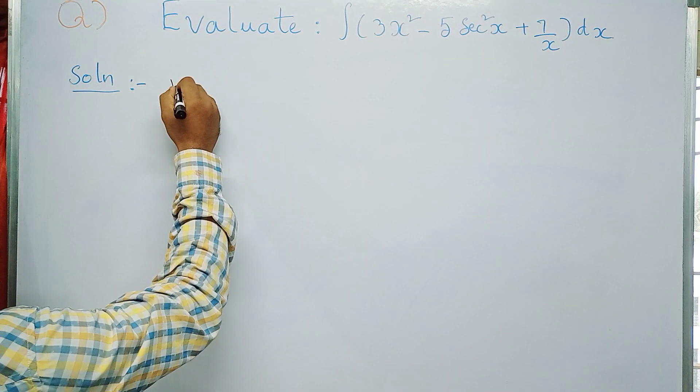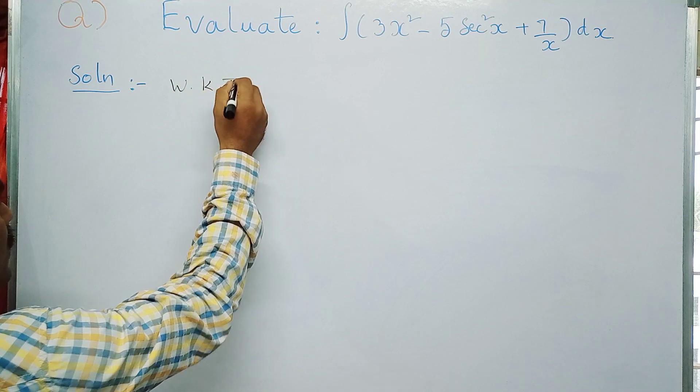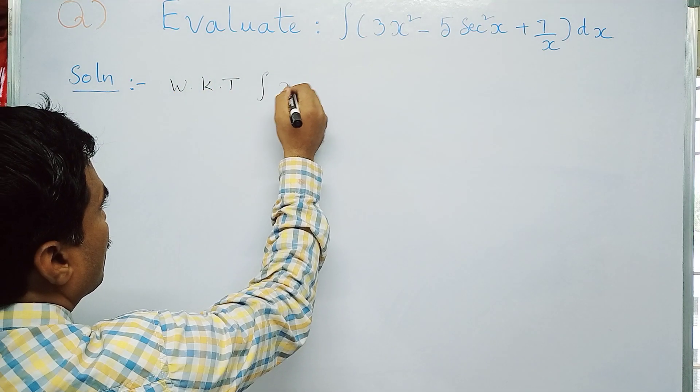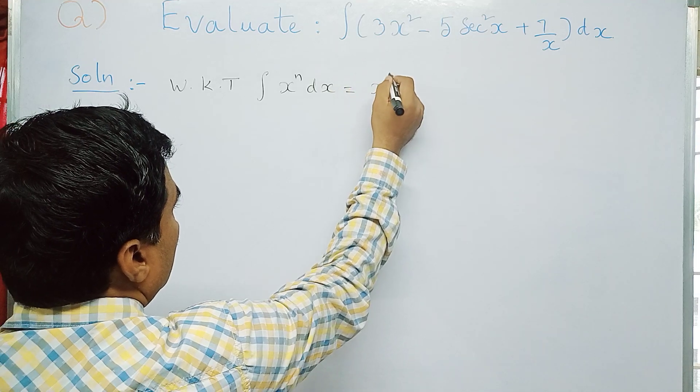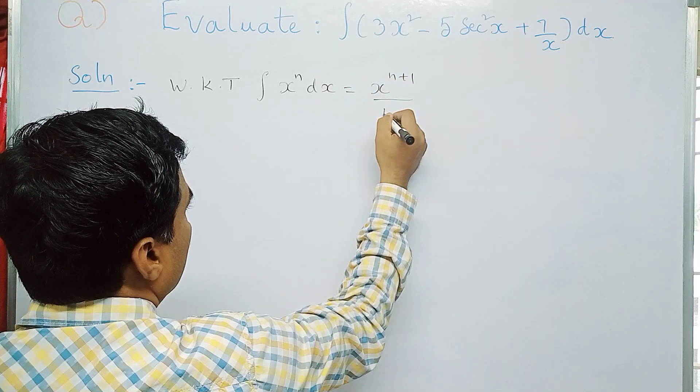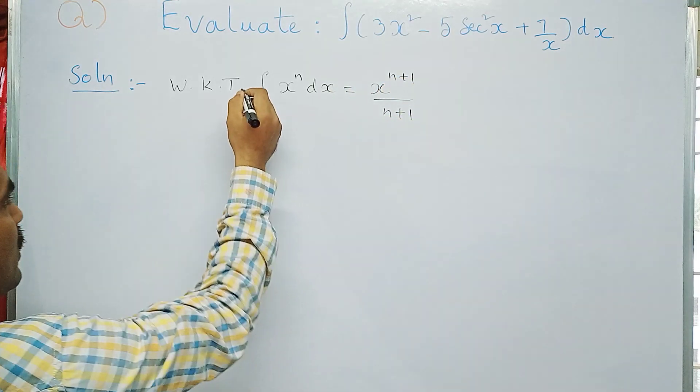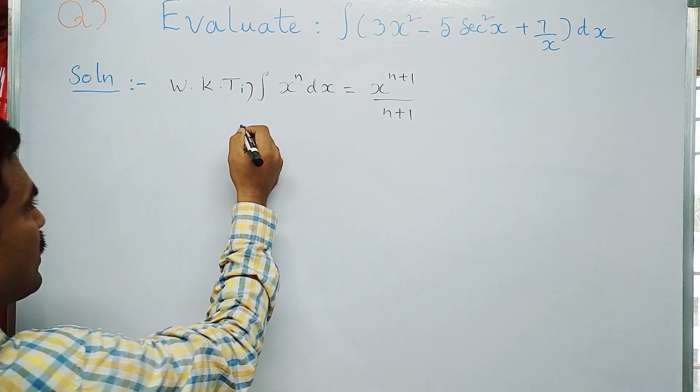Before solving this problem, we'll write the formulas first. We know that integral x power n dx equal to x power n plus 1 by n plus 1. This is first one. Second one is integral sec²x dx is tan x.